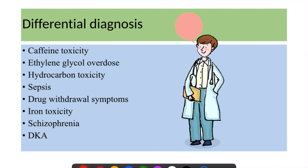The differential diagnosis for salicylate toxicity is broad and includes caffeine toxicity, ethylene glycol overdose, hydrocarbon toxicity, sepsis, diabetic ketoacidosis, and iron toxicity.